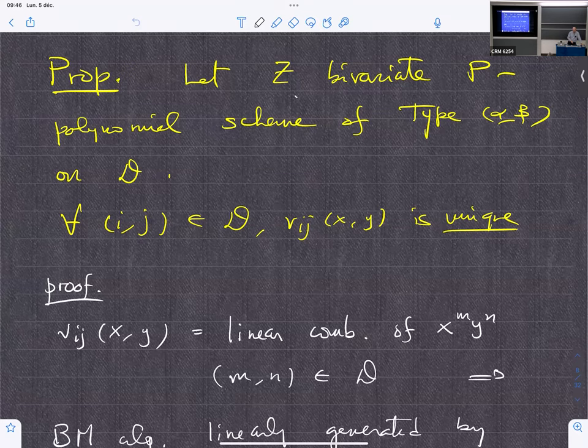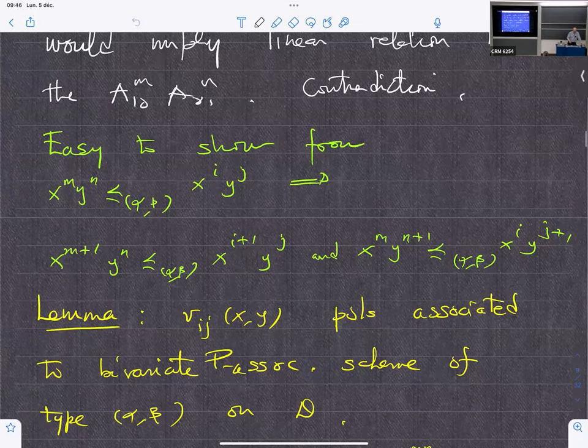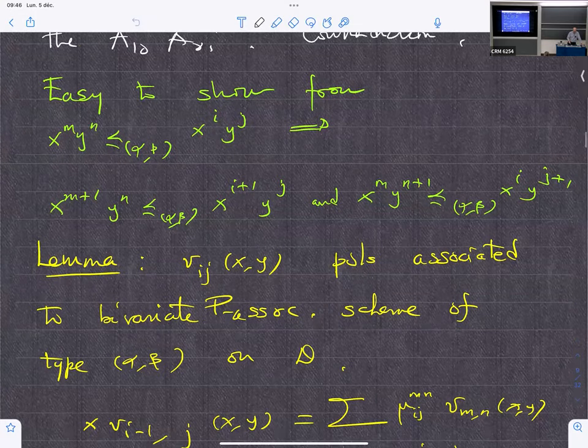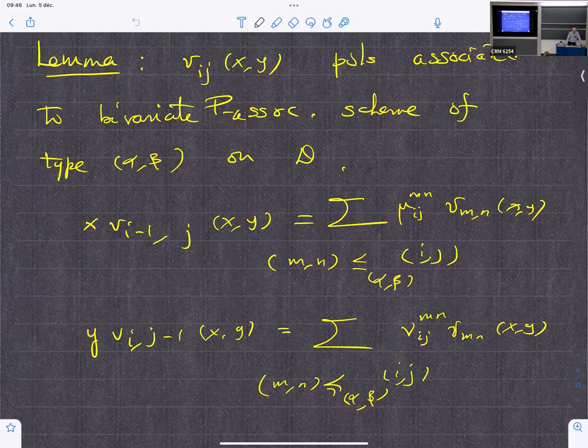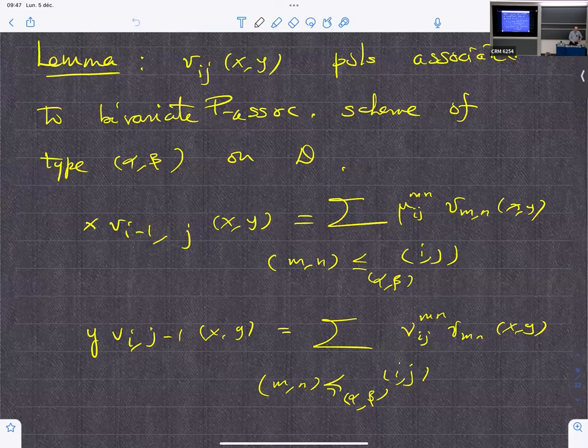And then the definition that counts is that we will say that the association scheme Z, the set of adjacency matrices, is bivariate P-polynomial of type alpha-beta and the domain D if these adjacency matrices, you can relabel them.